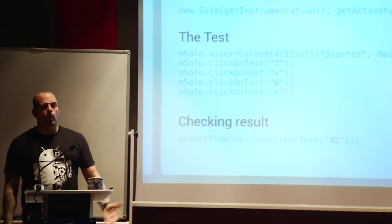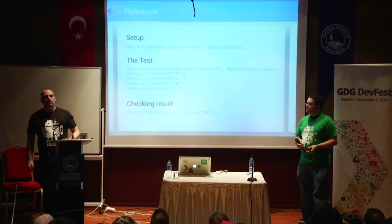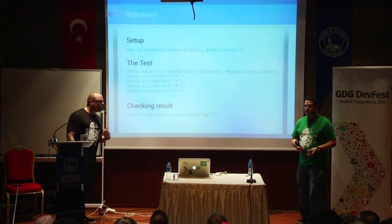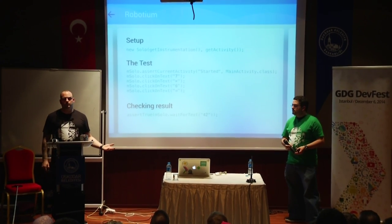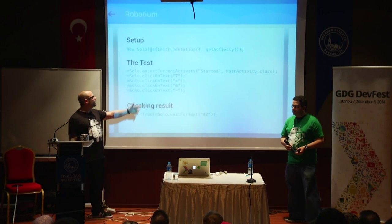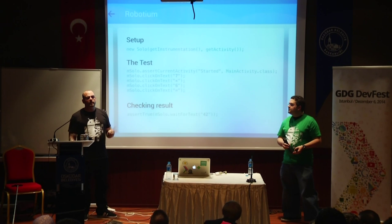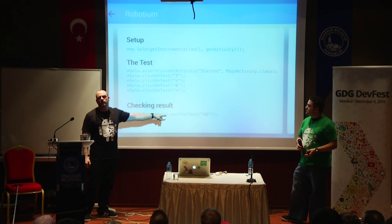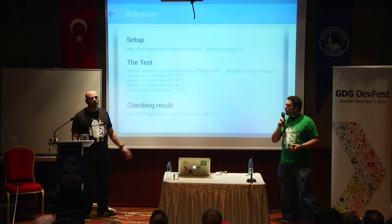For all the frameworks we're showing you today, you need to have some sort of library or package. Within your test setup, you define a Solo project, and with that Solo object you specify which activity to test. Writing the test means describing what a user is doing — click on text, click on a button. The only downside is you have to verify the current activity has started. Checking the result: you just tell the Solo object to wait for the text '42' to appear.